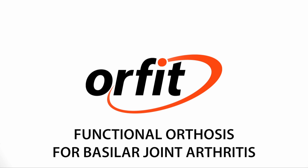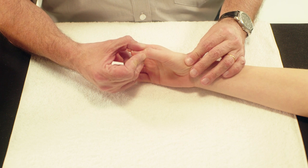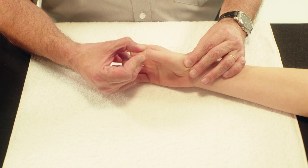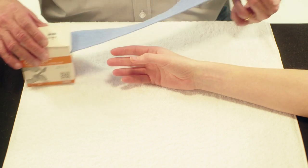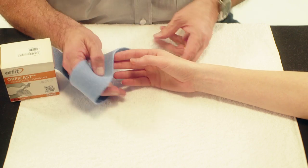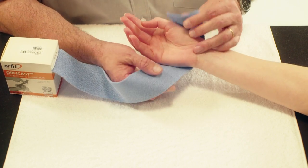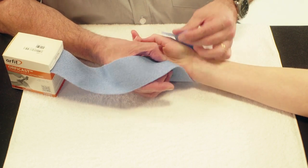Functional orthosis for basilar joint arthritis. Here we will demonstrate how to make a functional orthosis for patients with basilar joint arthritis. Use a strip of six centimeters wide Orficast. Measure two times the width of the hand at the level of the MCP joints and cut the Orficast accordingly.